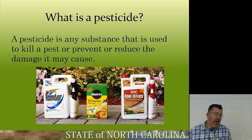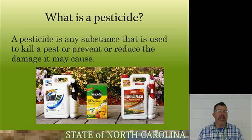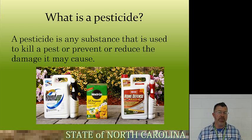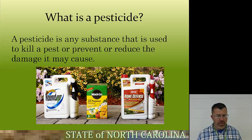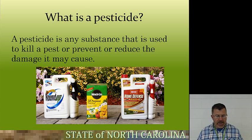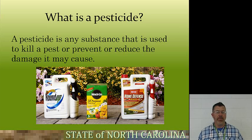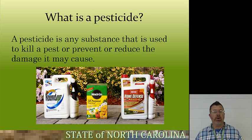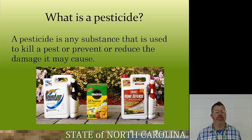So we know kind of what a pest is. What is a pesticide? It is any substance that is used to kill a pest or prevent or reduce the damage that it may cause. Here we see three examples that we've all seen in a big box store: Roundup, a non-selective herbicide — if you spray Roundup on any living plant, whether it be an ornamental shrub, tree, or grass, you're either going to kill it or cause extreme damage to it. Miracle-Gro, an all-purpose plant food pesticide.